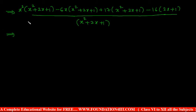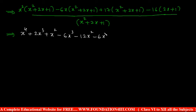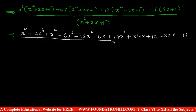Let us simplify and solve this. Simplifying: x to the power 4 plus 2x cubed plus x squared. Again with minus 6x, you multiply: minus 6x cubed minus 12x squared minus 6x. I multiplied everything. Plus 17x squared plus 34x plus 17. Minus 32x minus 16. And divided by x squared plus 2x plus 1.